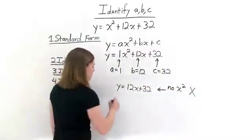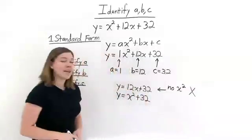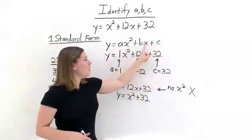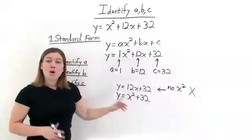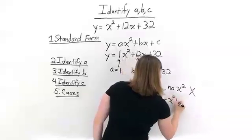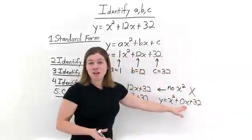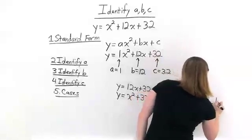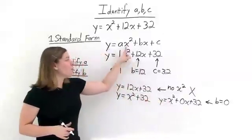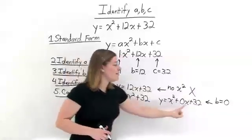Now let's look at another case. Let's say y is equal to x squared plus 32. If we set this up in standard form, we have our x squared term and our constant, but we don't have an x term in the middle. In that case, we could rewrite this as y equals x squared plus 0x plus 32 — putting 0x in as a placeholder. That means our b term, the coefficient in front of x, is 0. We have a quadratic equation, but since there's no x term, b is equal to 0.